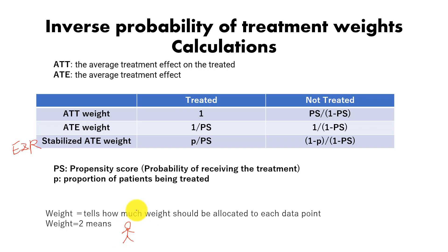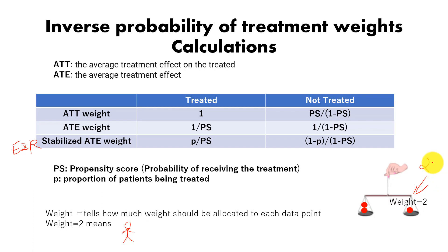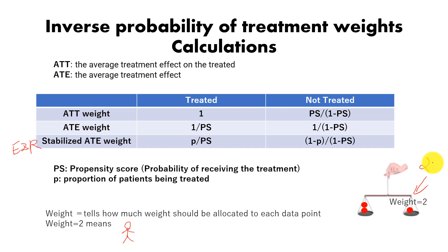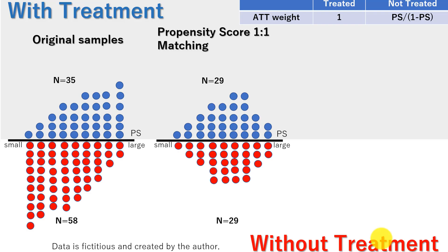The concept is straightforward. If we give all observations a weight of 2, the balance becomes even. The purpose of conducting IPTW analysis is to make background characteristics equal between the comparison groups. We give more weight to each patient's data so that baseline characteristics become balanced.